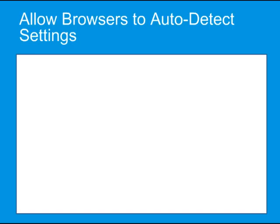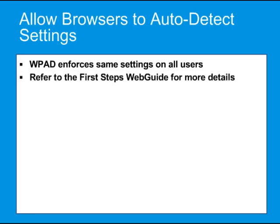If you want all devices in your network to use the same proxy settings, you can configure the ProxySG appliance to allow browsers to auto-detect settings. Using Web Proxy Auto-Discovery Protocol, or WPAD, allows you to enforce the same settings for all users. Use this method if you want all users' browsers to determine the location of the PAC file through DNS. Refer to the First Steps web guide for more details on how to configure the ProxySG to allow browsers to auto-detect settings.